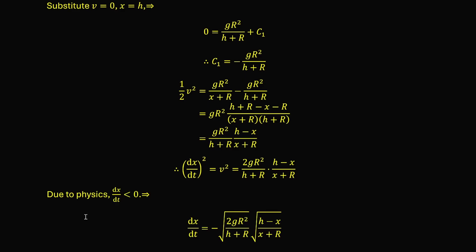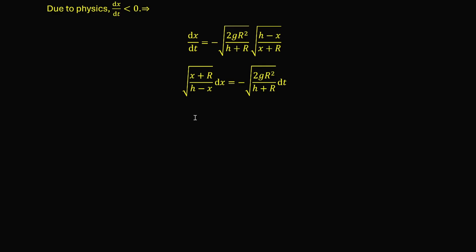Recalling that the body is falling downward, so dx/dt is negative. By taking the negative square root, we have dx/dt equals minus the square root of 2gr²/(h + r) times the square root of (h − x)/(x + r). This is once again a separable differential equation, so we separate the variables and integrate. Separating variables gives: the square root of (x + r)/(h − x) dx equals minus the square root of 2gr²/(h + r) times dt.